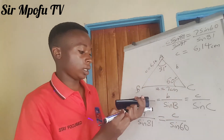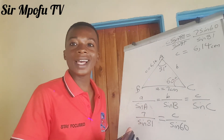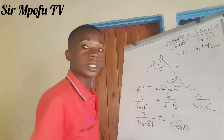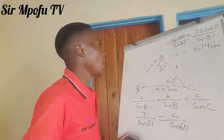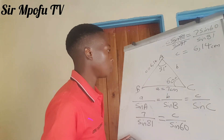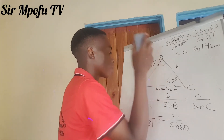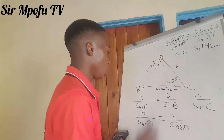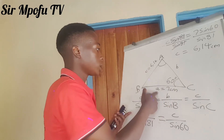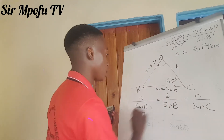Remember, your syllabus wants you to leave your answers to three significant figures unless told otherwise. But if it's degrees, leave it to one decimal place. Now, let's say we are not given angle A — let's find that angle in this case. We still use the same formula.